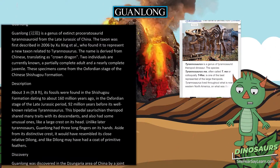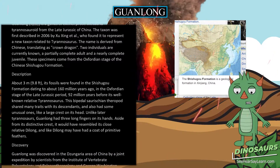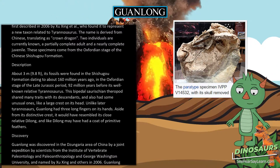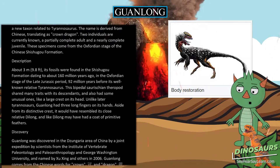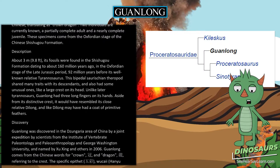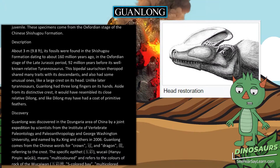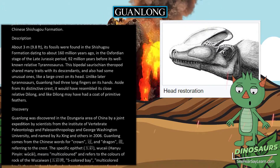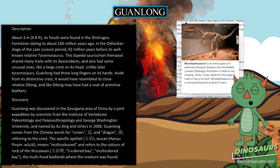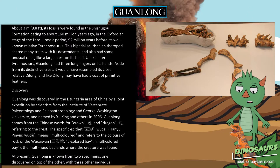These specimens come from the Oxfordian stage of the Chinese Shishugou Formation. About 3 meters (9.8 feet) in length, its fossils date to about 160 million years ago — 92 million years before its well-known relative Tyrannosaurus. This bipedal saurischian theropod shared many traits with its descendants, but also had some unusual ones, like a large crest on its head. Unlike later tyrannosaurs, Guanlong had three long fingers on its hands.